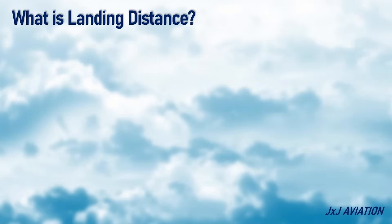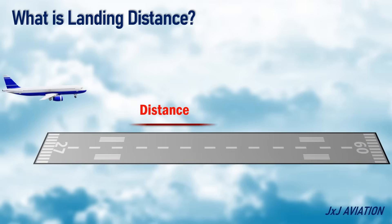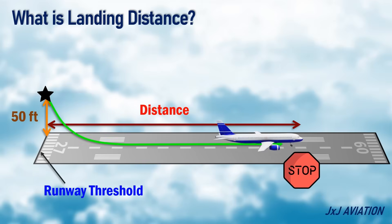First, let's look at what is landing distance. The landing distance of an aircraft is the horizontal distance the aircraft travels, from a specific point on its approach path to the point where it comes to a complete stop on the runway. Normally, the distance is measured from 50 feet above the runway threshold to the point where the aircraft stops completely. This is also called the actual landing distance.